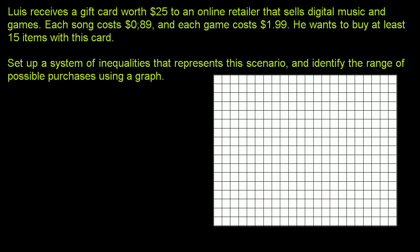Luis receives a gift card worth $25 to an online retailer that sells digital music and games. Each song costs $0.89 and each game costs $1.99. He wants to buy at least 15 items with this card. Set up a system of inequalities that represents this scenario and identify the range of possible purchases using a graph.